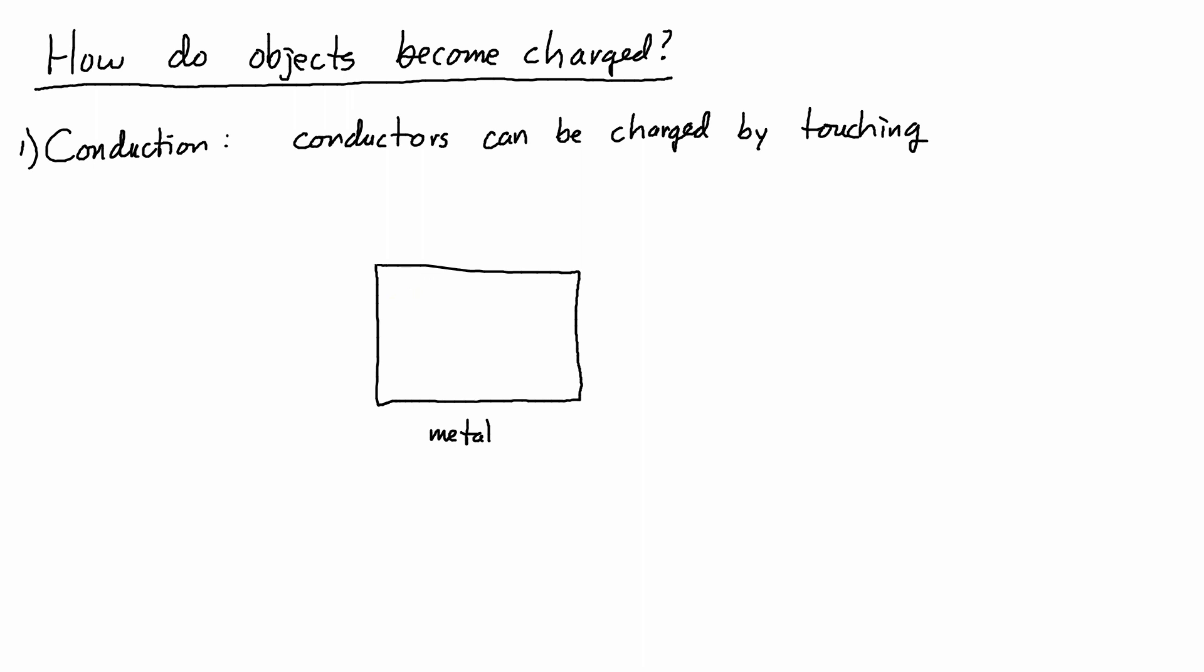The charges stay on the metal, but they don't actually stay in the same place because the metal is a conductor. Remember there were four charges there before, those four charges are going to redistribute themselves. Because they're all the same sign, negative charges, they're going to repel each other and keep pushing against each other.